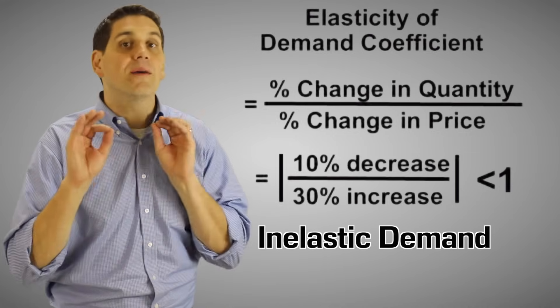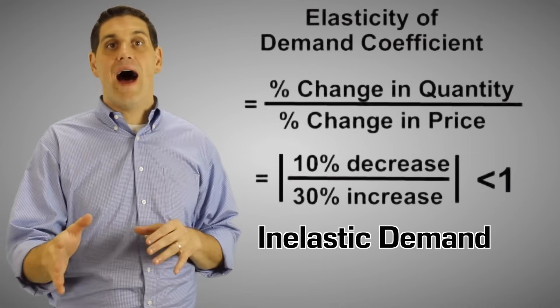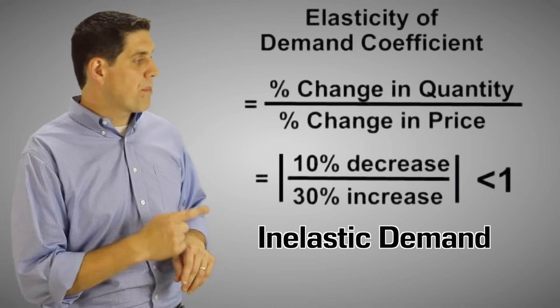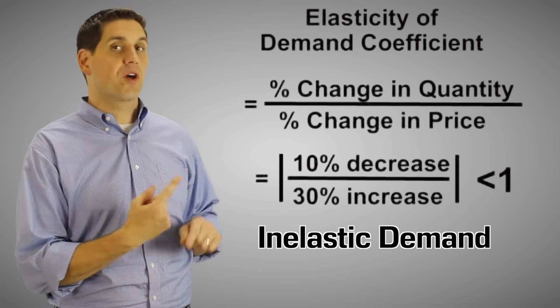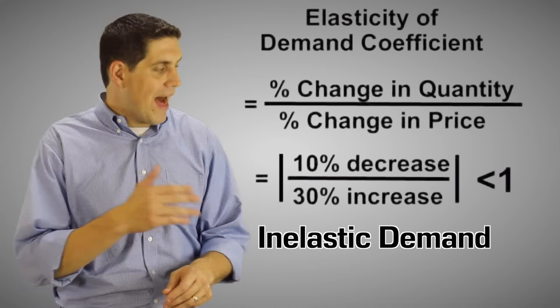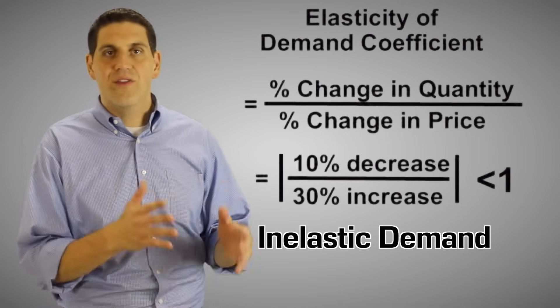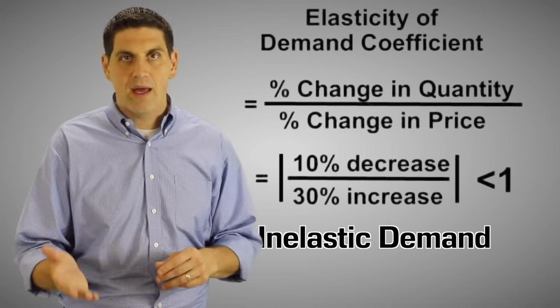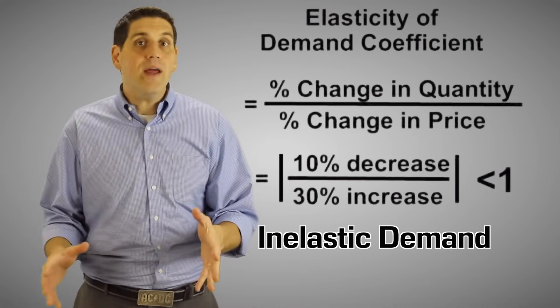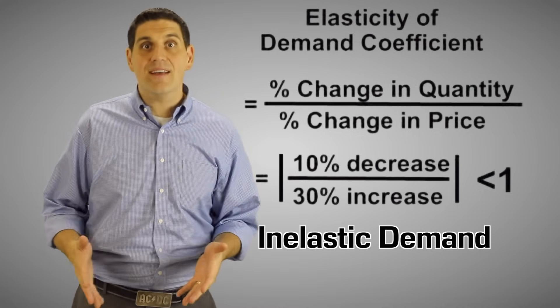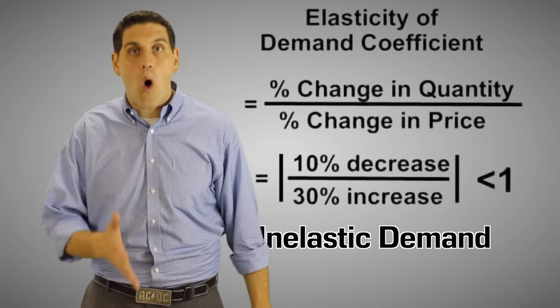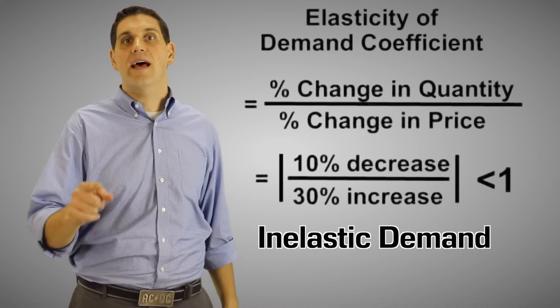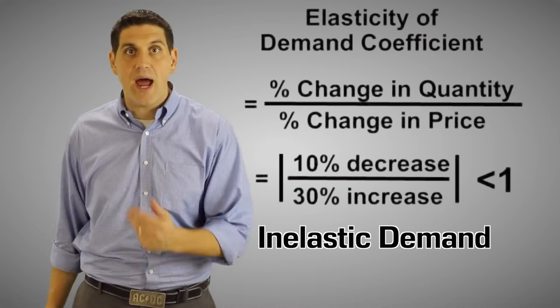Real quick, we're talking about absolute value. Remember, when the price goes up, the quantity always goes down. So we're talking about the absolute value of the elasticity of demand coefficient. The point is, when there's inelastic demand, the quantity is insensitive to a change in price.